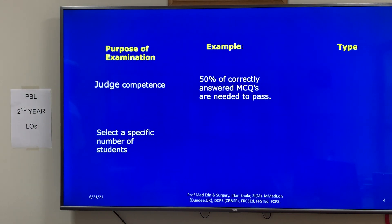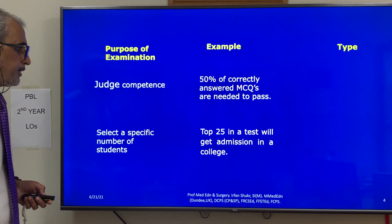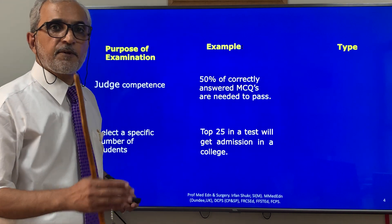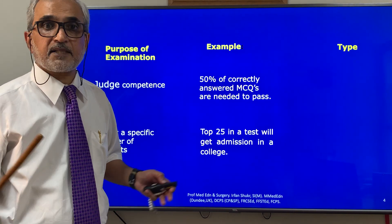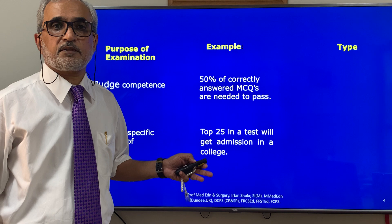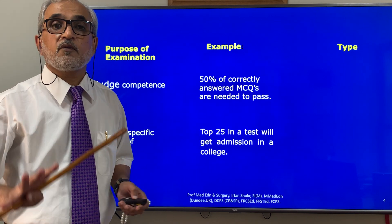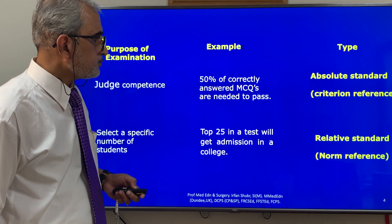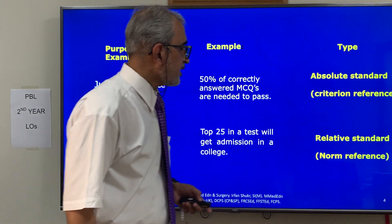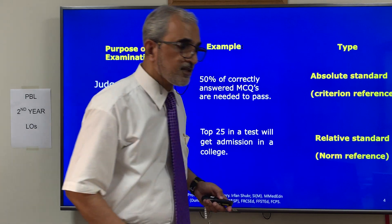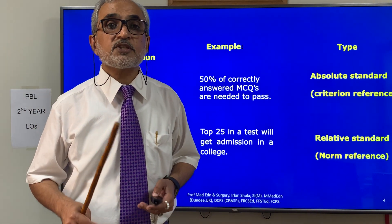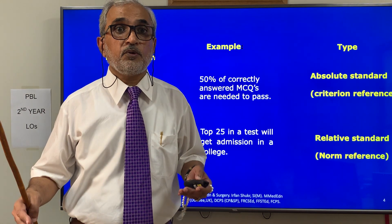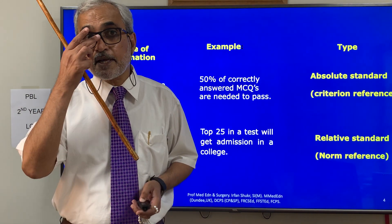When selecting a specific number of students for another purpose, an example could be that the top 25 in a test will get admission to a college, irrespective of the number of students or what their scores are. This is a relative standard and it is norm-referenced, because you are making a judgment keeping in view all the candidates who appeared in the exam.